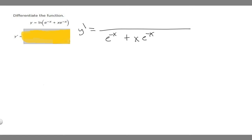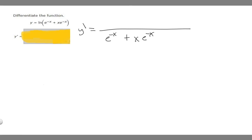Because we're using the chain rule, we multiply by the derivative of our inside, which is just going to go on top. So all we need to do is find the derivative of (e to the minus x plus x times e to the minus x) and put it in the numerator.